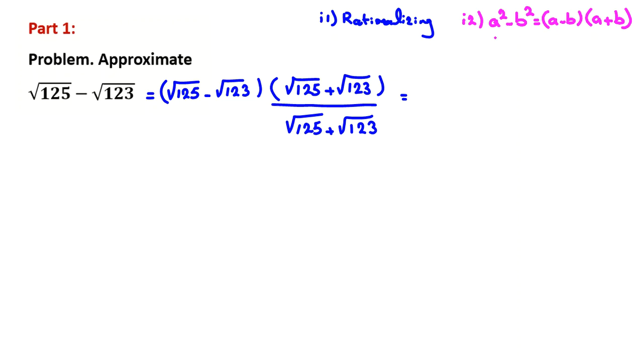We have a similar factorization for Aⁿ minus Bⁿ — try to find this; that is Homework 1. Comment your answers right below this video.